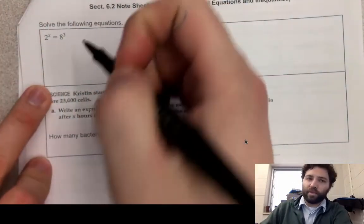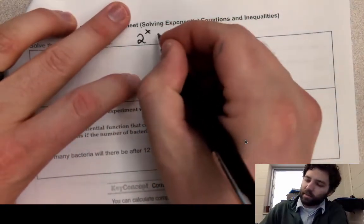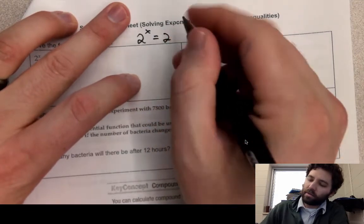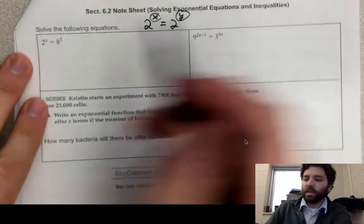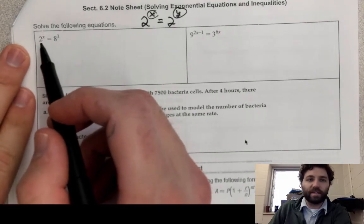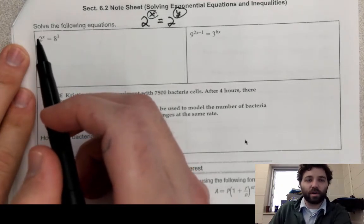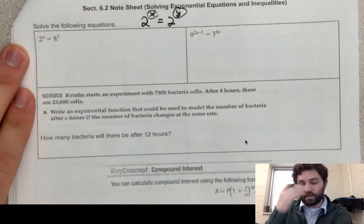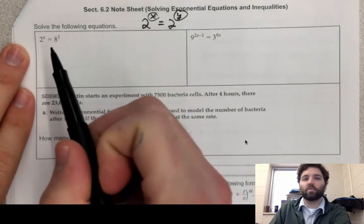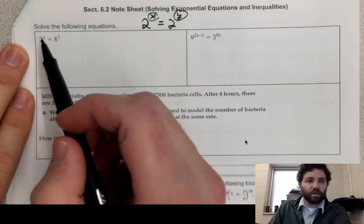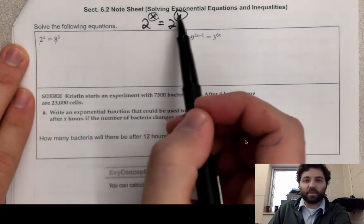For 2 to the x equals 8 cubed, the method we're going to rely on is the idea that if I have 2 to the x equal to 2 to the y, then x and y have to be equal to each other. I can't get rid of the x — I can't take the x root of both sides. Our typical tools won't work, so the first method is to try to write each side with the same base, then set the exponents equal to each other.